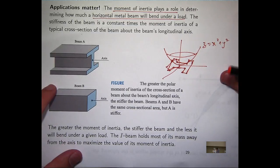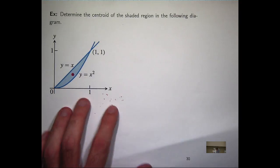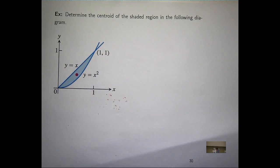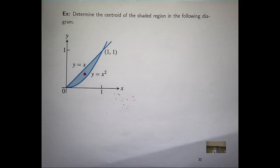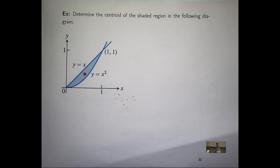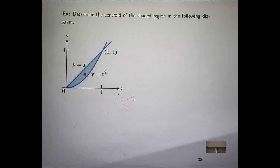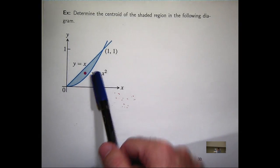Let's determine the centroid of a shaded region. The centroid is like a center of area — not a center of mass. There's no density function associated with it per se. We can still use the center-of-mass ideas from the previous slides, but we just take the density function to be a constant. When we divide the moments by the mass, the constant density cancels out.